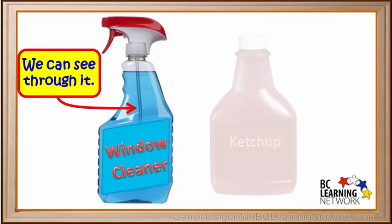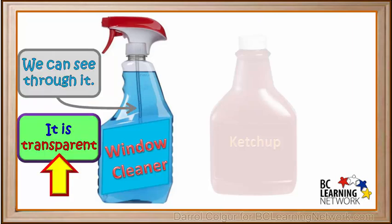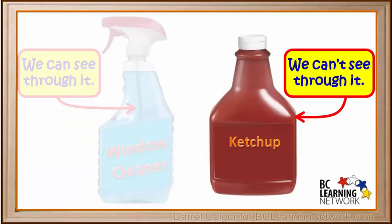Notice you can see through the window cleaner. Materials that we can see through are said to be transparent. Something doesn't have to be colorless to be transparent — window cleaner is blue, but it is still transparent because we can see through it. Notice we can't see through the ketchup, so it's not transparent.